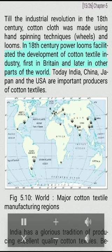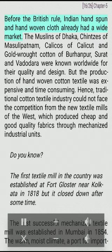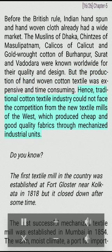In the 18th century, power looms facilitated the development of the cotton textile industry, first in Britain and later in other parts of the world. Today India, China, Japan, and the USA are important producers of cotton textiles. India has a glorious tradition of producing excellent quality cotton textiles. Before British rule, Indian hand-spun and hand-woven cloth already had a wide market. The muslins of Dhaka, chintzes of Masulipatnam, calicos of Calicut, and gold-wrought fabrics of Baroda were known worldwide for their quality and design. However, traditional cotton textile industry could not face competition from new textile mills of the West, which produced cheap, good-quality fabrics through mechanized industrial units.